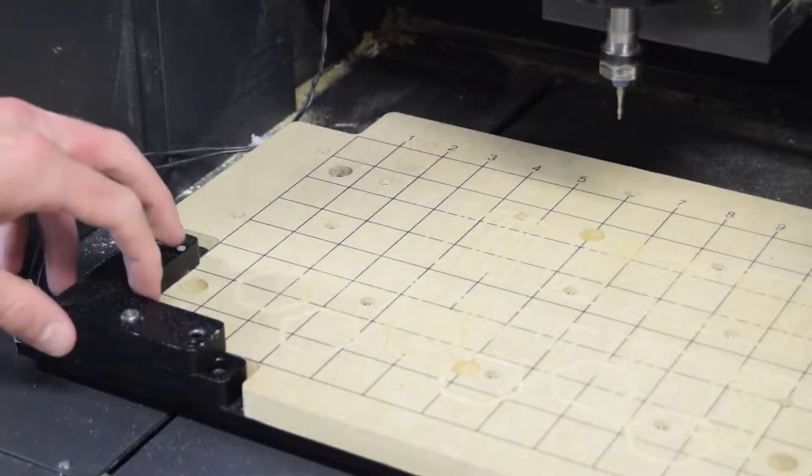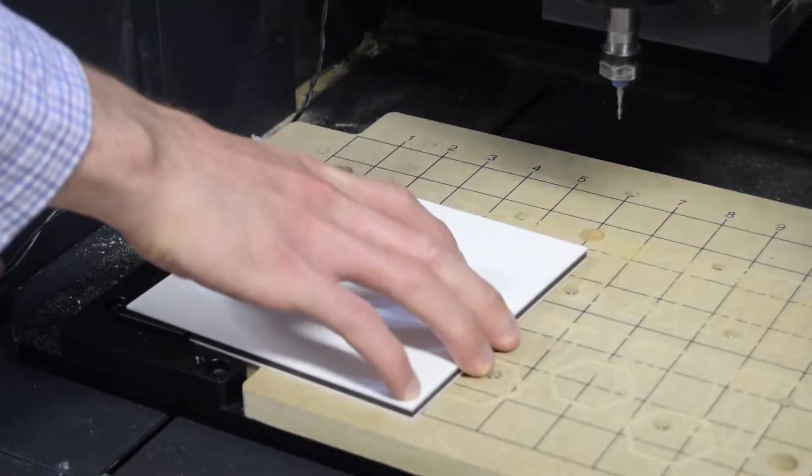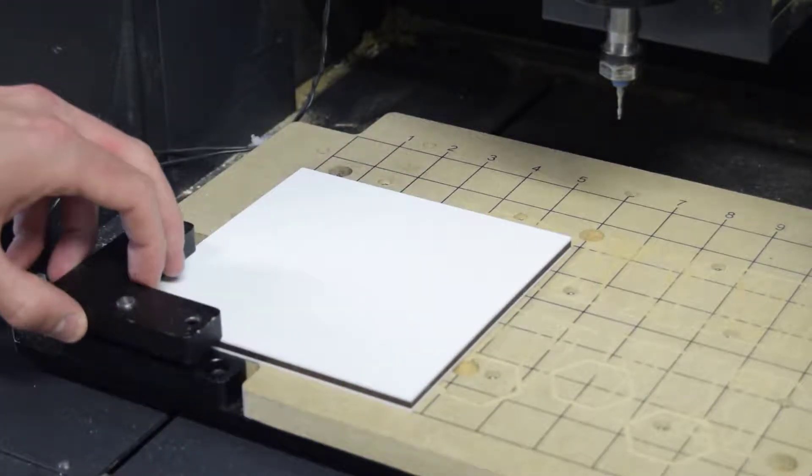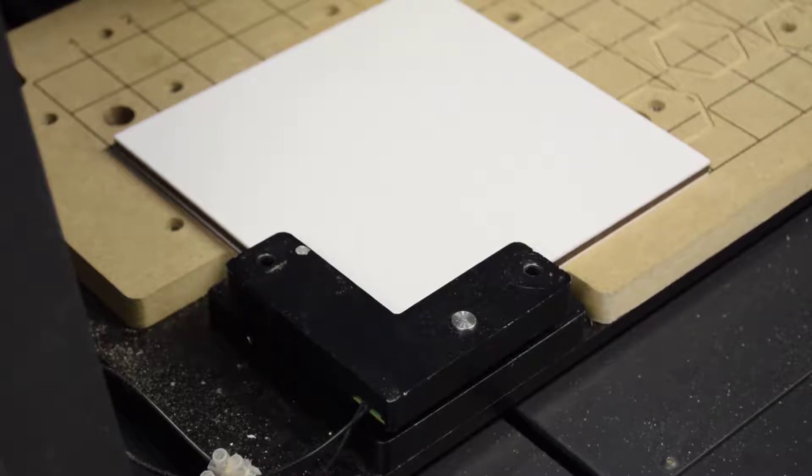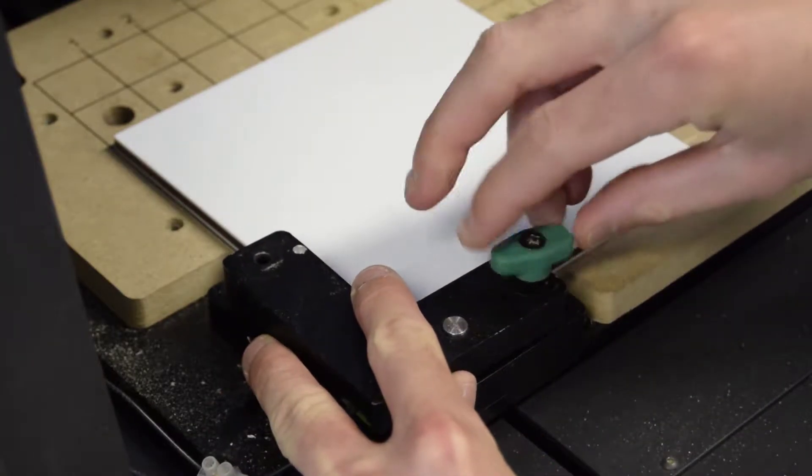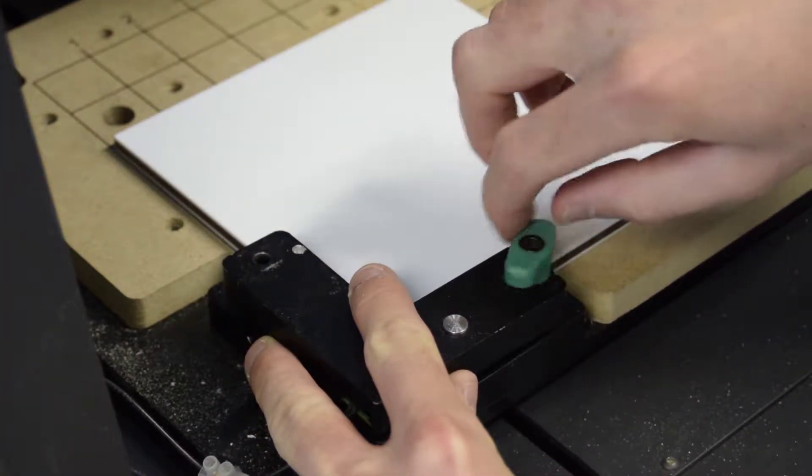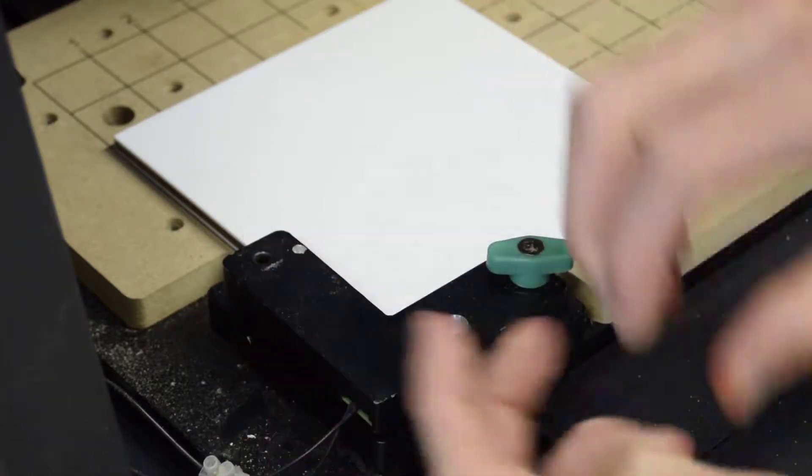Align the material parallel to the lines on the wasteboard and press the bottom left corner against the lip of the smart clamp. Secure the smart clamp above the material, choosing an appropriately long screw.